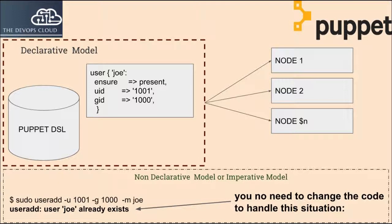Puppet manifests that contain configuration information can be used any number of times to achieve the same results. If the desired end state has already been reached, Puppet simply ignores the item in question. Users need only worry about the desired end state of the system to be configured, not the sequence of steps required to get there.